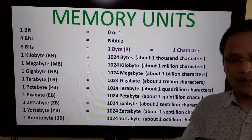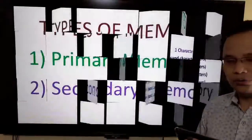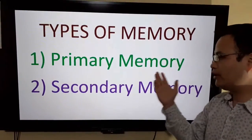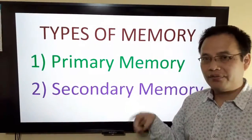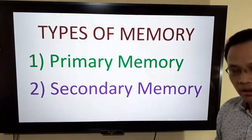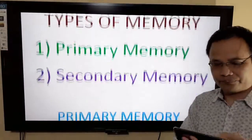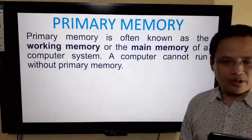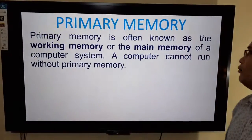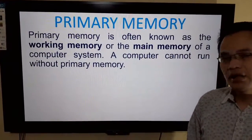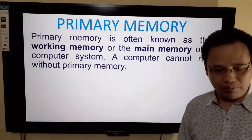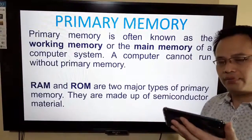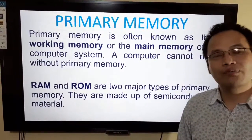Now let's move on to the types of memory. There are two types of computer memory: primary memory and secondary memory. Primary memory is often known as the working memory or the main memory of a computer system. A computer cannot run without primary memory. RAM and ROM are the two types of primary memory, and they are made up of semiconductor material.